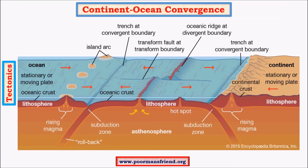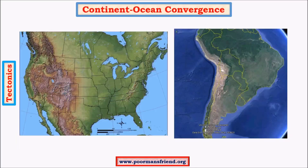Next we will move on to continent-ocean convergence. In continent-ocean convergence the same kind of process as we see in ocean-ocean convergence occurs, except that here the other plate is continental. There is a subduction zone, metamorphosis, and light volcanic eruptions, but here the mountain formation is not due to volcanic eruptions but a different process - like the formation of the Rockies and Andes.